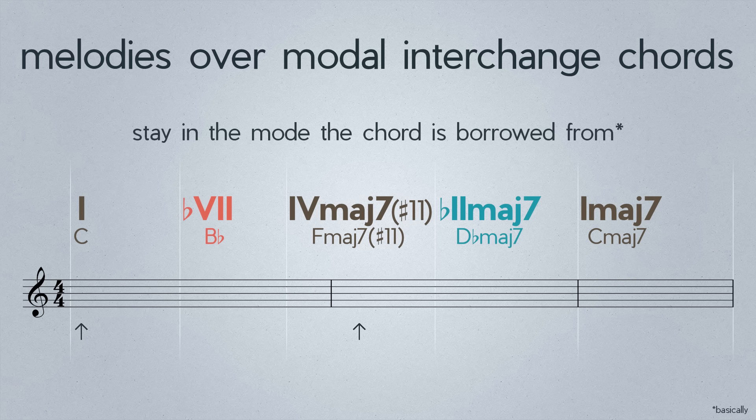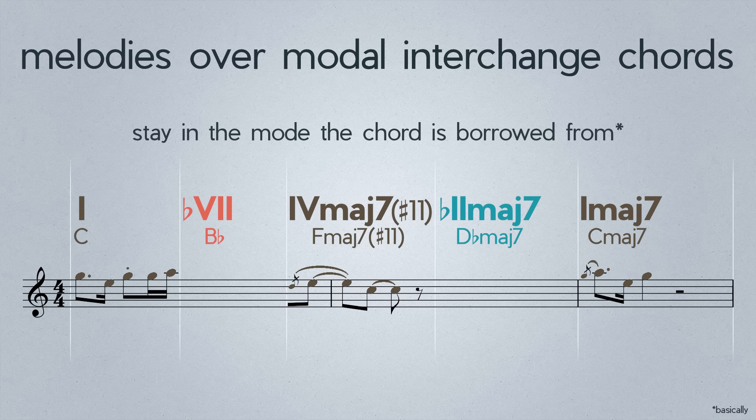Since the I, IV major 7 sharp 11, and I major 7 chords are diatonic to C Ionian, our melody over these chords will draw from the pitches of the C Ionian scale. We can make these things as complex or as simple as we want. Now, since we borrowed the flat 7 chord from C Aeolian, our melody will use the pitches of the C Aeolian scale for the duration of this chord. And finally, since our flat 2 major 7 chord was borrowed from C Phrygian, our melody here will use the pitches of the C Phrygian scale. Altogether, we have an effective melody that moves through several different colors while working well with our harmonic progression.